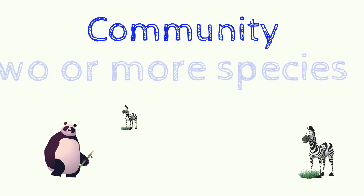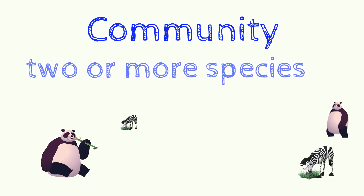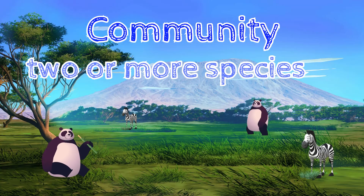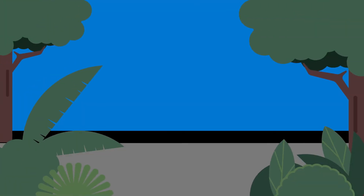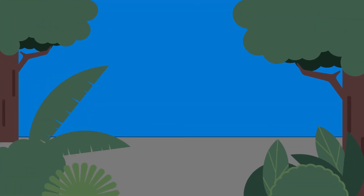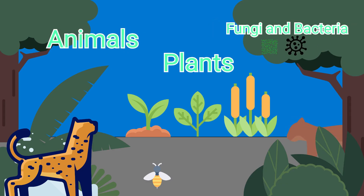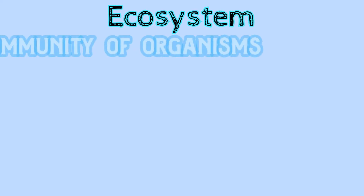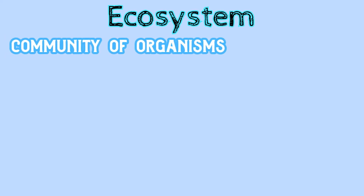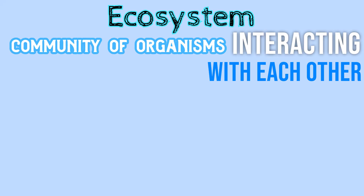Biologists use the word community to define two or more species that interact with each other in a particular area. In a rainforest, various species of plants, animals, fungi, and bacteria depend on each other to survive.